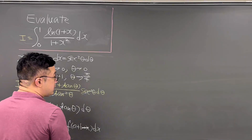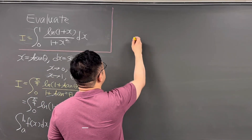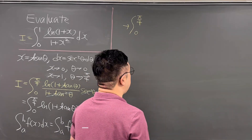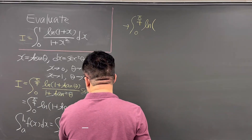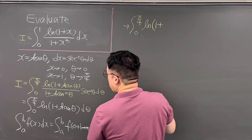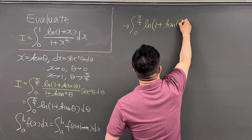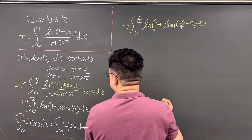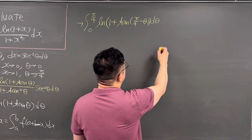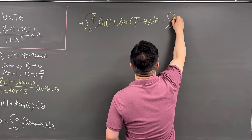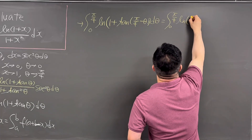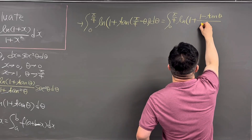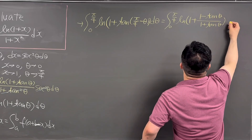Using this, let's rewrite the integral. It is still the integral from 0 to pi over 4, but now of ln of 1 plus tangent of pi over 4 minus theta, d theta. This can also be rewritten as the integral from 0 to pi over 4 of ln of 1 plus 1 minus tangent theta over 1 plus tangent theta, d theta.